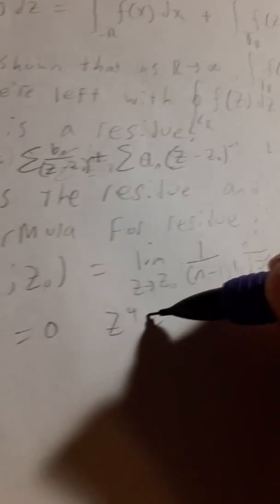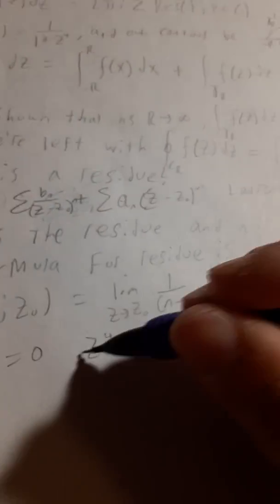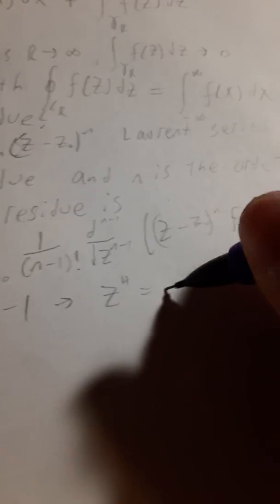When our denominator z to the 4th plus 1 equals 0, we have z to the 4th equals minus 1. We can write minus 1 as e to the iπ. Solving for z gives us: z equals e to the iπ/4, e to the i3π/4, e to the i5π/4, and e to the i7π/4.